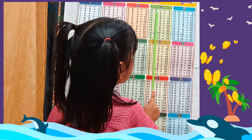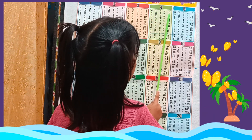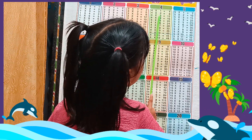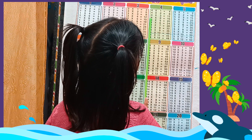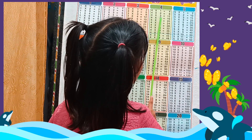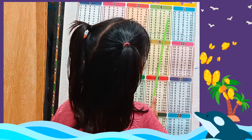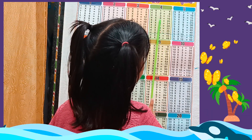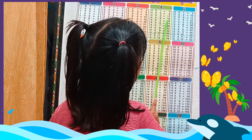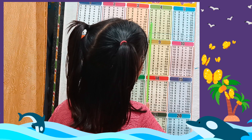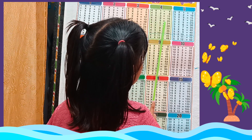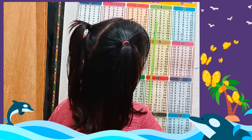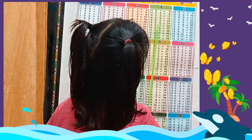4 2s are 8, 4 3s are 12, 4 4s are 16, 4 5s are 20, 4 6s are 24, 4 7s are 28.